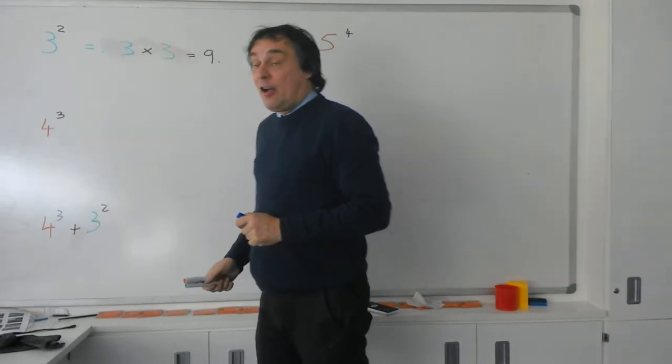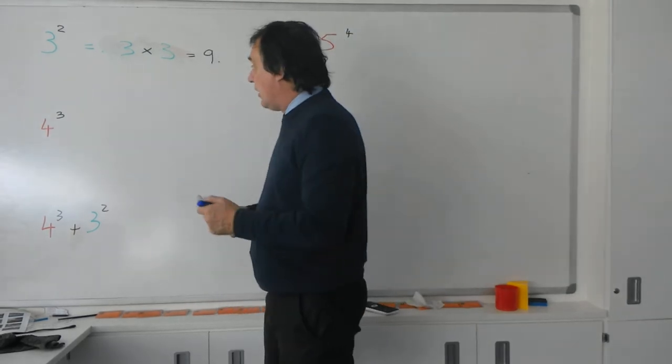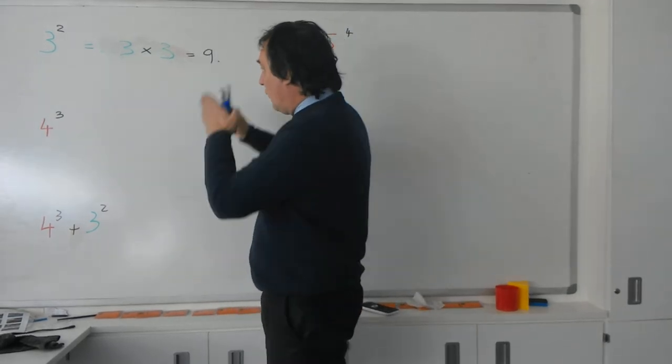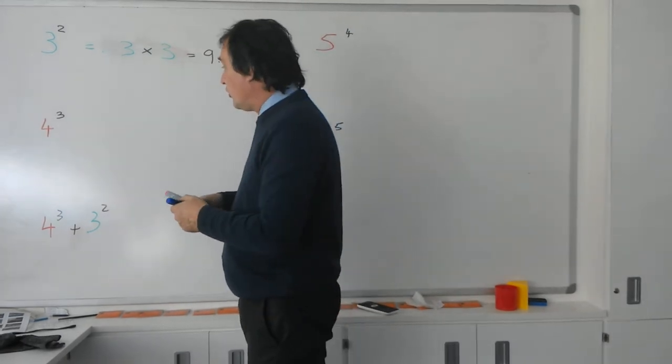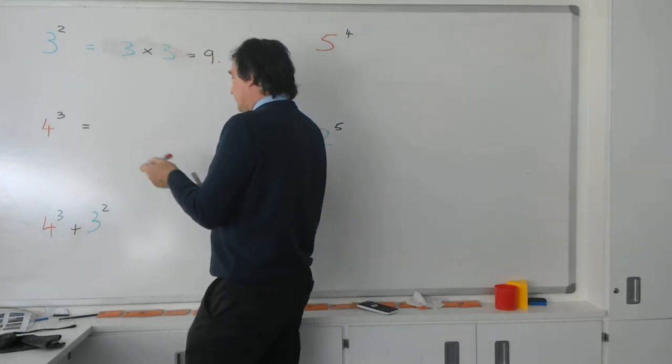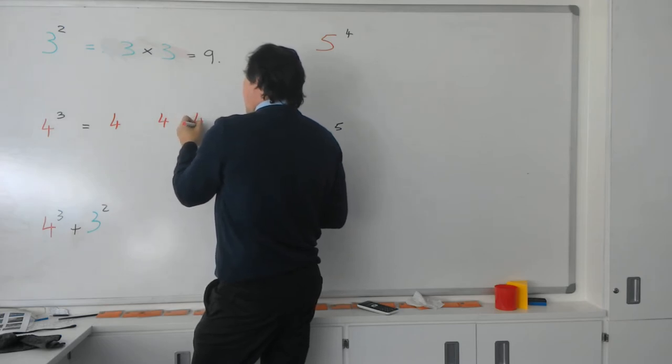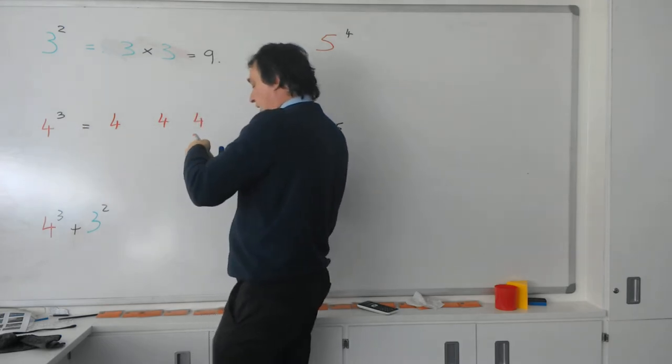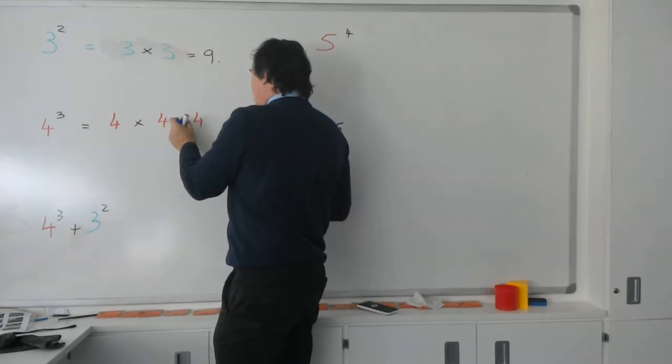Now, if we're looking then at 4 cubed, in other words that's that 3, there's a 4, it's not going to be 4 times 3, which is 12, in the same way that we crossed out that answer above. 4 cubed is going to be 4, another 4, and another 4, so I've got 3 4's all together, each with a multiplication sign in between.